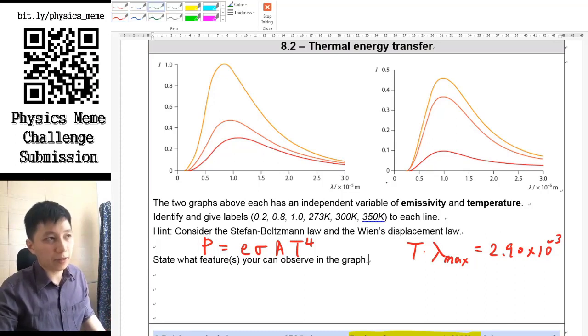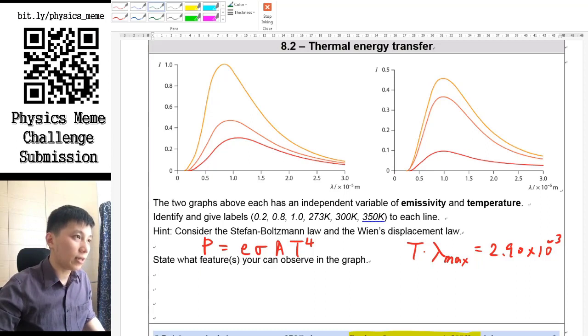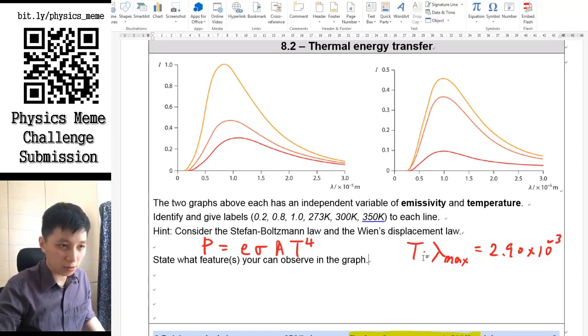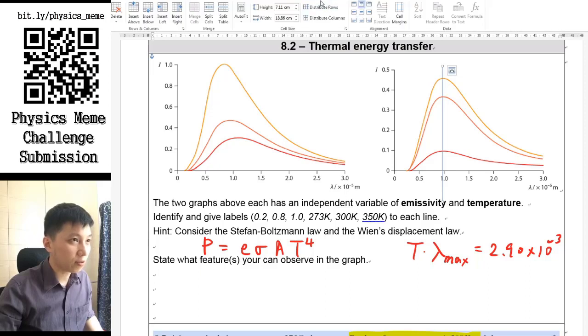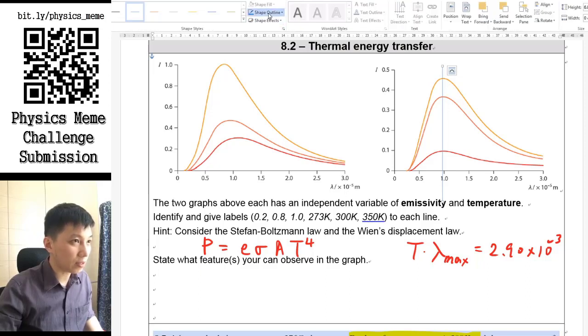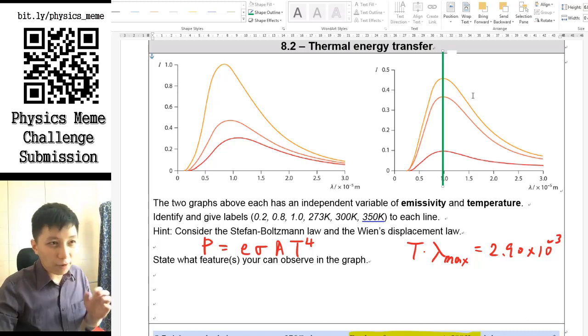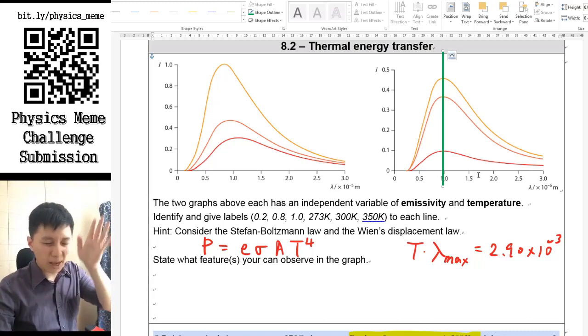Before we start to make a decision, I think the other thing that we should do is to check whether or not the maximum wavelength is on the same line. On the graph you can see one of them will have the peak aligned together. Let me draw a line in green color, and I think you could see that the graph on the right, the maximum intensity for each of them is all on the same wavelength.